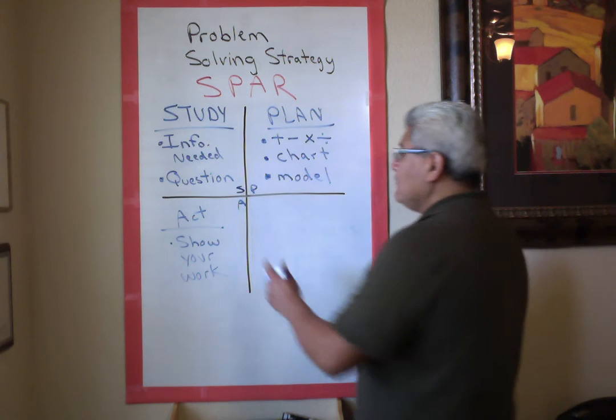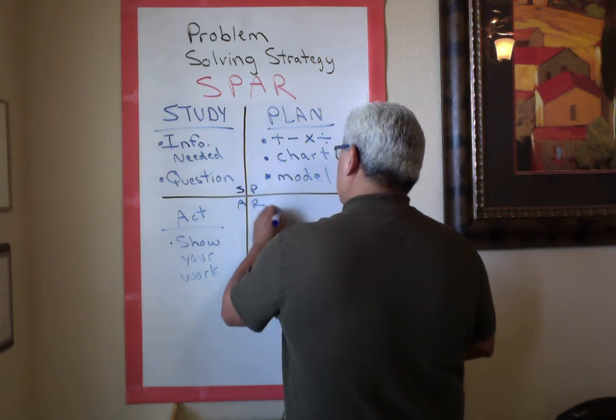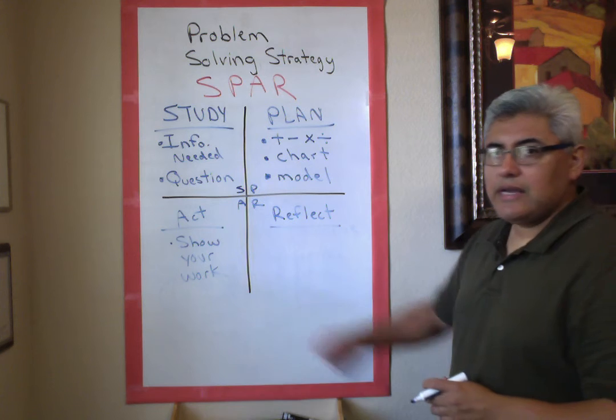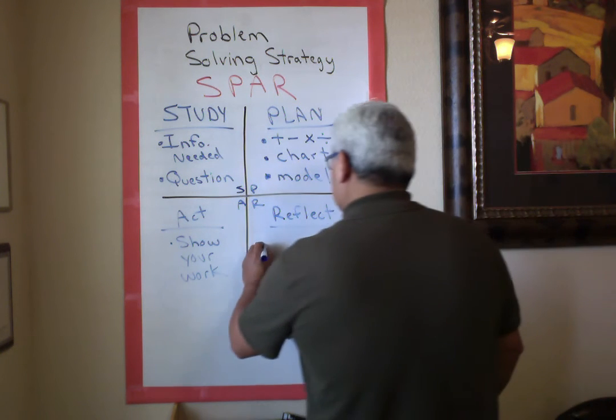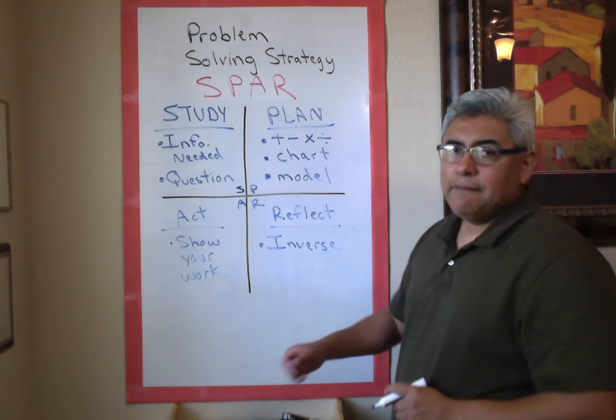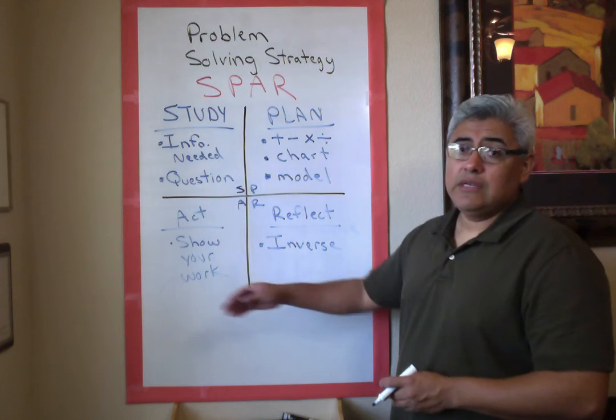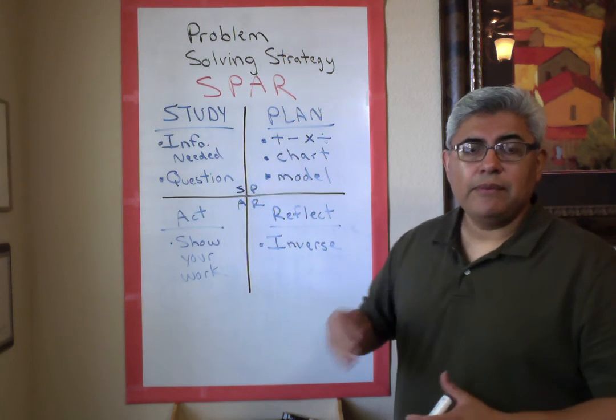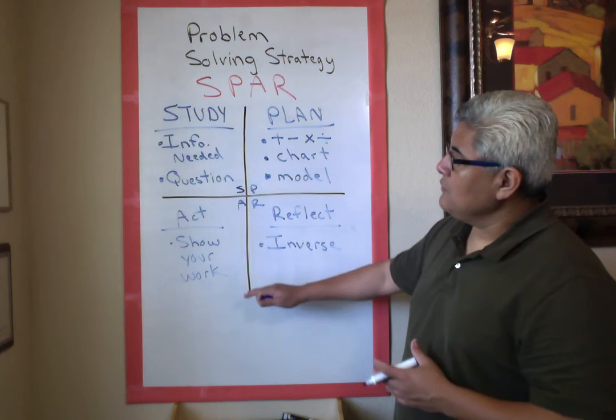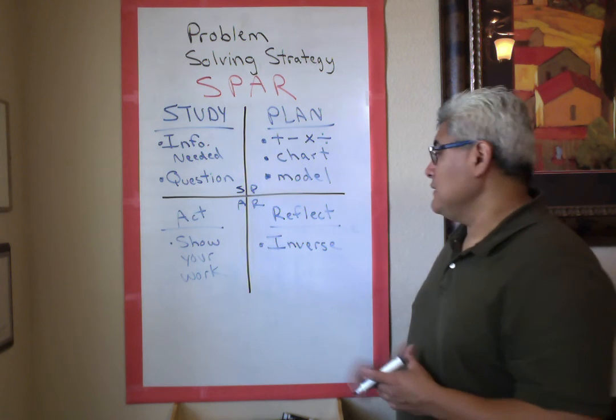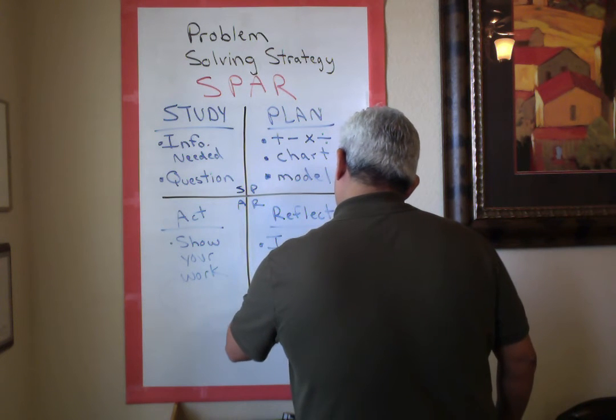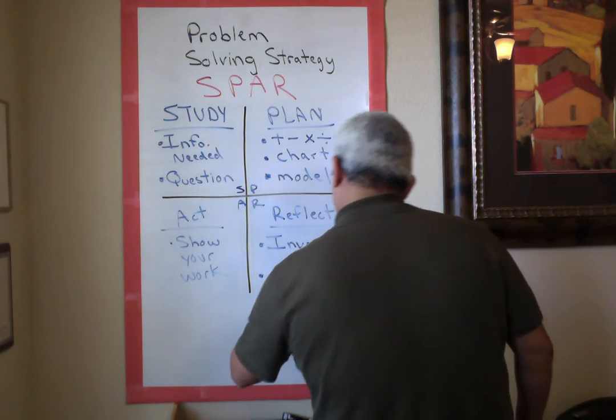Our last step is R for Reflect, which means check. Check your answer, check your choice, check your work. Do the inverse operation - if you multiply, you can divide, or you could do repetitive addition. It all depends on what you do, but make sure you check your work and answer the question.